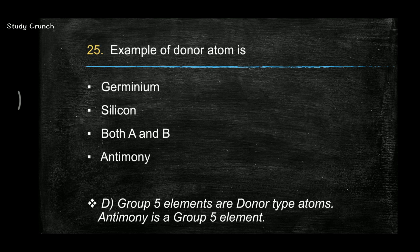Next, example of donor atom is antimony. Out of these four, antimony is the option. So group 5 elements are donor type atoms.